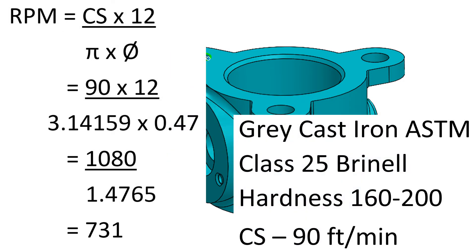Since the cutting speed for a high speed steel drill in this material is 90, the RPM will be 90 times 12 divided by pi times the diameter which equals 730 revolutions per minute.